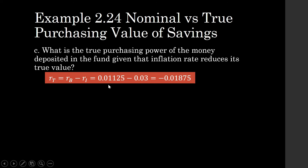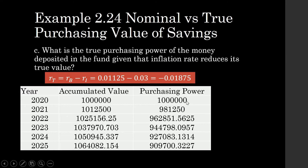The true rate R sub T is negative, meaning our money is still losing value even in the bank. If we compute the true purchasing power of the money deposited in the bank, your 1 million pesos after five years will have been reduced to only 909,700 pesos — losing around 90,000 pesos in purchasing power even while earning interest. That is the effect of inflation rate.